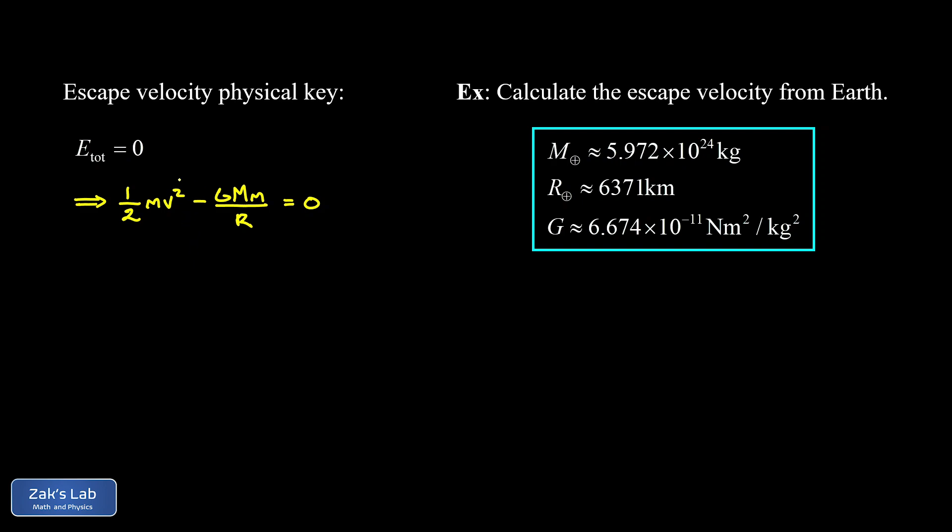So the first thing I want to point out here is that we can divide the little mass out of this equation. That means the mass of the thing that we're launching doesn't matter. No matter what size it is, it has to reach the same minimum velocity to escape Earth. And our goal is to solve for v. So we're going to add GM over R to both sides and then multiply it by two and take the square root. So the first thing we're doing is adding that to both sides. Then we multiply by two to get rid of that one half. And then we square root the result to isolate v. So there's our general escape velocity from the planet, the square root of two GM over R.